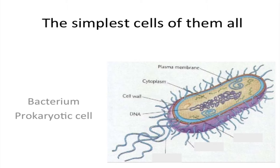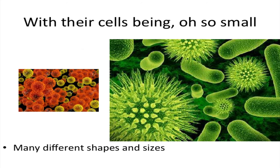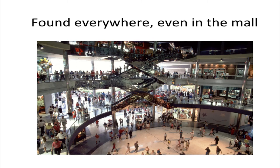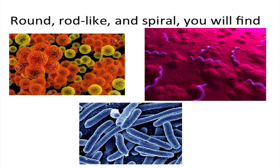The simplest cells of them all are prokaryotic with a cell wall, with their cells being oh so small, found everywhere even in the mall. They come in three main kinds: round, rod-like, and spiral you will find.